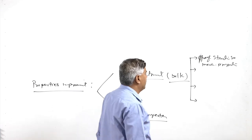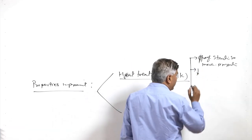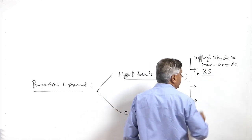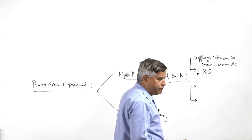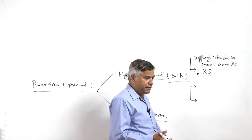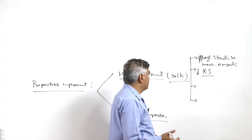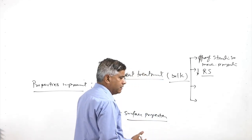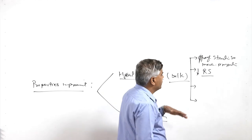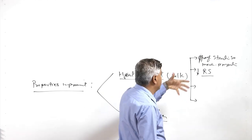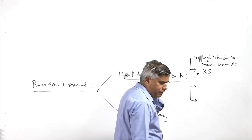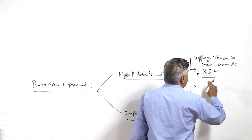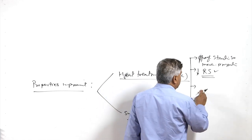Another purpose is stress relieving — reducing the residual stresses developed during manufacturing by different processes such as casting, machining, or welding. In all those cases, residual stresses degrade the mechanical performance of components, so we want them relieved. Heat treatment is also done to facilitate further processing of metals, especially in cold working operations.